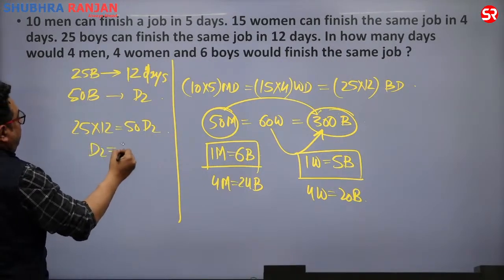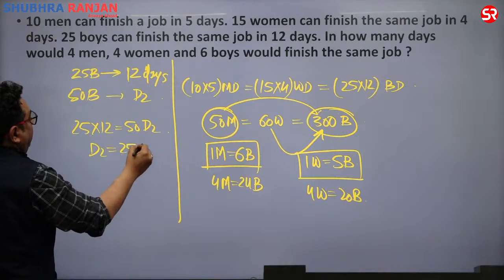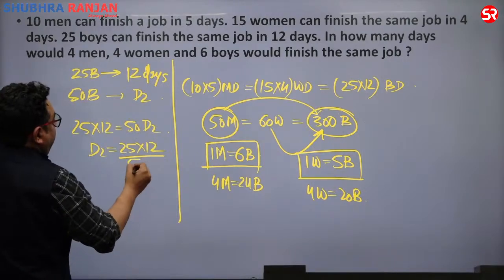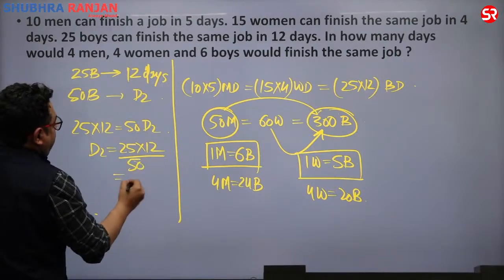So 25 boys in 12 days, 50 boys in D2 days: 25 × 12 equals 50 × D2, so D2 equals 25 × 12 / 50 equals 6 days.